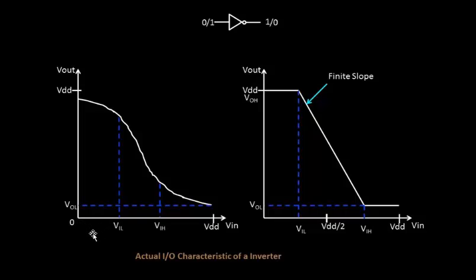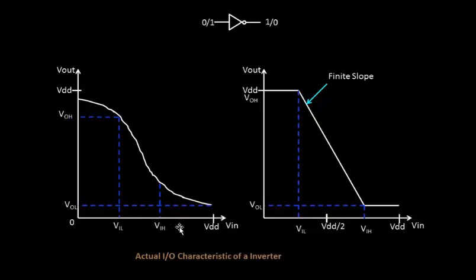VOH is the highest voltage attained at the output — it's not exactly VDD in the practical case, but it's the value detected as logic 1. When the input is in the range 0 to VIL, the output is expected to be VOH or above. VOH must be greater than VIH because this output connects to the next logic stage, and the next stage must recognize it as logic 1.